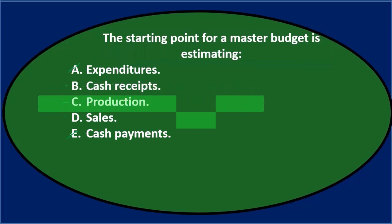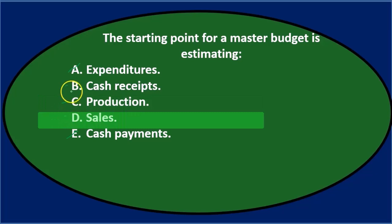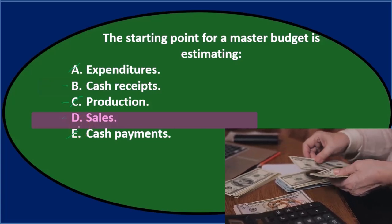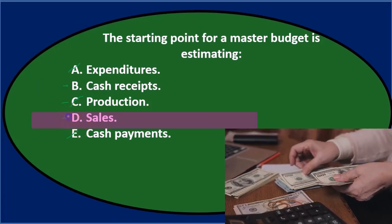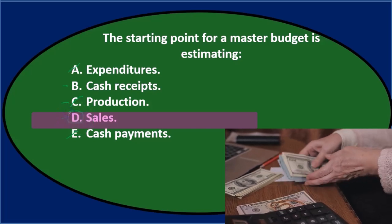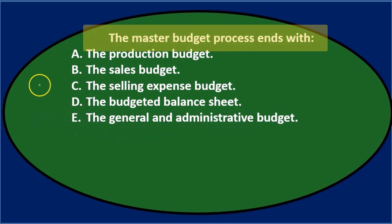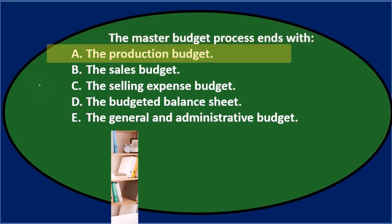Of the remaining three, it comes down to cash receipts versus sales before production. Between cash receipts and sales, we generally go through sales first because we need to know what the sales are before we can consider what the cash receipts will be. Final answer: the starting point for a master budget is estimating D) sales.